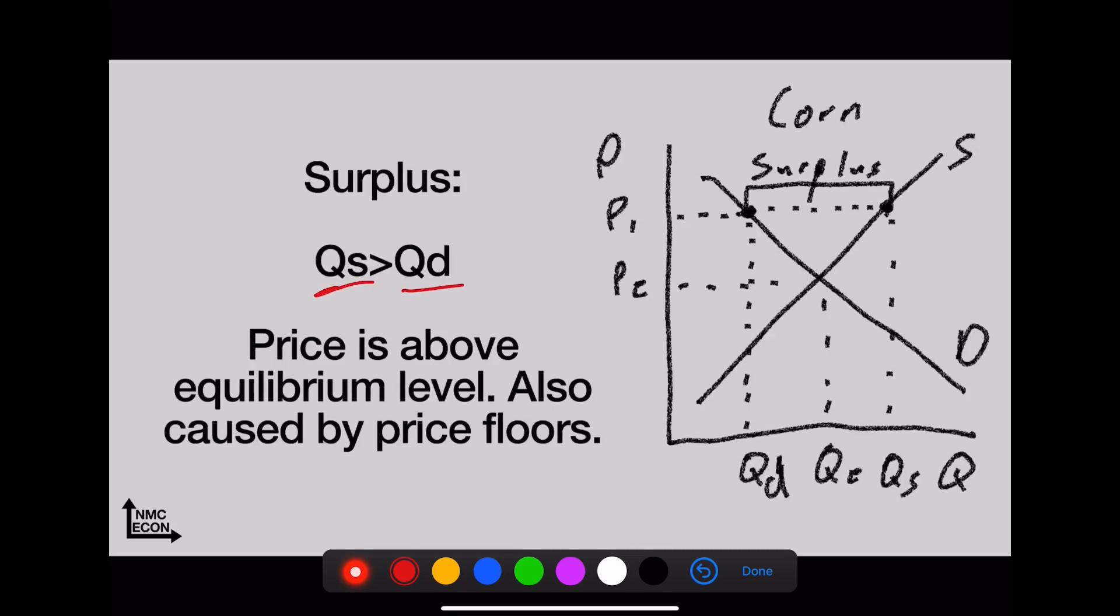Anytime price is above equilibrium you should have a surplus—again, often caused by price floors. Look here: Pe is what the market wants to charge. Well, what if this corn producer tries to charge P1? They're going to see a surplus. That price is too high—Qs much bigger than Qd.